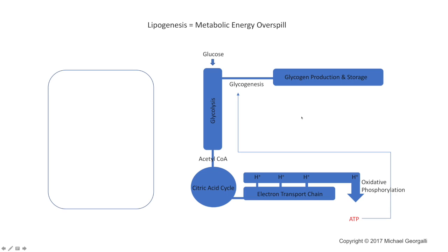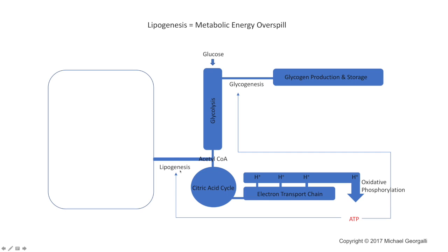There will be a point where your glycogen stores within a cell become maxed out. At that point, glucose can no longer be converted into glycogen. However, glucose is still producing large amounts of acetyl-CoA — so large that the citric acid cycle is choking. To overcome this, the cell's metabolism has an overspill mechanism that drives acetyl-CoA into a new metabolic pathway — called lipogenesis — which is also anabolic and requires ATP.